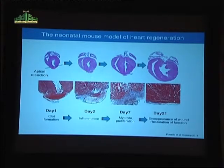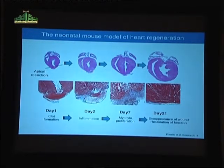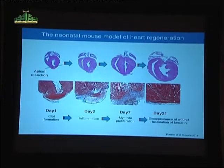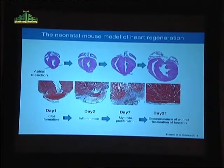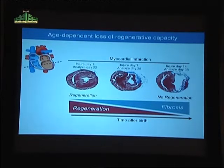These animals, following massive injury to their hearts, can fully regenerate cardiac function and structure, and they then go on to live the same lifespan as a normal mouse. The amount of tissue mass removed — roughly 20% — is the same amount used in studies from zebrafish and salamanders that documented the regenerative potential of those organisms. We also wanted to ask whether inducing a massive myocardial infarction in a neonatal mouse could also be followed by a regenerative response.